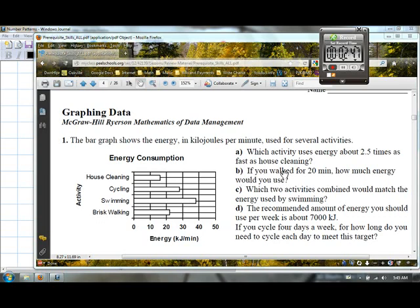If you walked for about 20 minutes, how much energy would you use? Let's look at brisk walking. We got about, I don't know, 22 kilojoules per minute. Does that look right? So if we went for 20 minutes, this is kilojoules per minute. We're going to have 22 multiplied by 20. I would say that's roughly 440 if I'm a betting man. But you got your calculator in front of you and you figure it out.